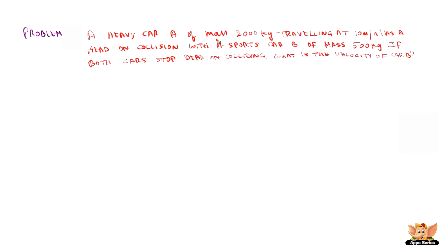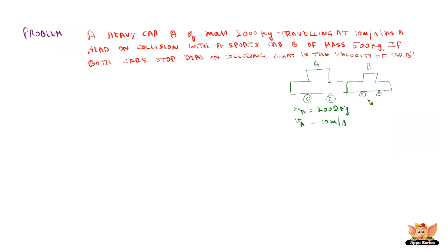A heavy car A of mass 2000 kg traveling at 10 meters per second has a head-on collision with a sports car B of mass 500 kg. If both cars stop dead on colliding, what is the velocity of car B? Car A has mass 2000 kg and velocity 10 m/s; car B has mass 500 kg and unknown velocity. After collision, both cars come to a stop.